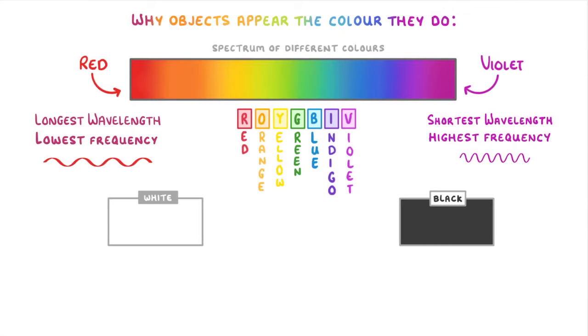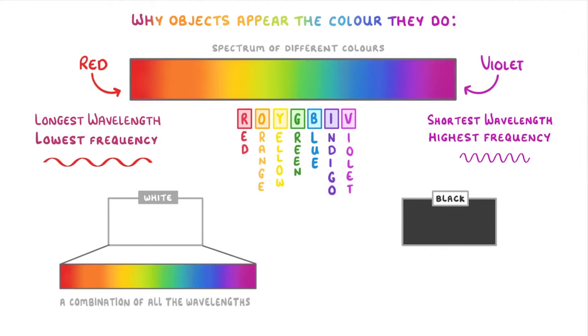White and black aren't on the spectrum though, because white light is a combination of all the wavelengths, which together make white, and blackness is just an absence of light. So if there is no light, it will appear black.